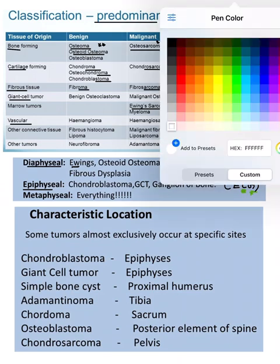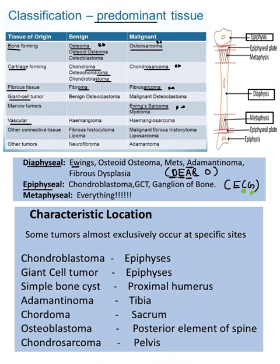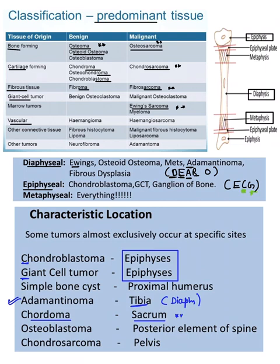Characteristic locations: chondroblastoma and giant cell tumor are epiphyseal. Adamantinoma is a diaphyseal tumor located in the tibia. Chordoma's classic location is the sacrum. Osteoblastoma is seen in the spine, and importantly, its pain does not decrease with NSAID intake. Chondrosarcoma's classic location is the pelvis.